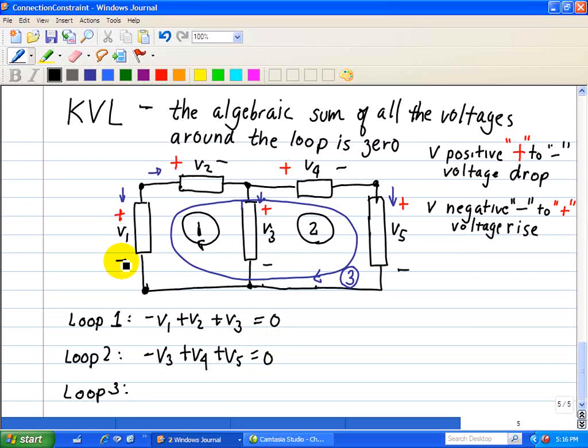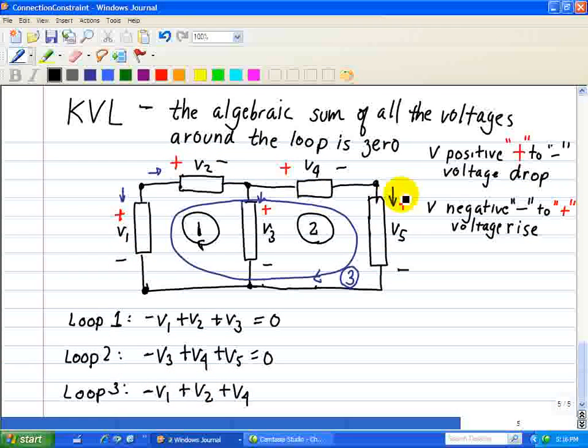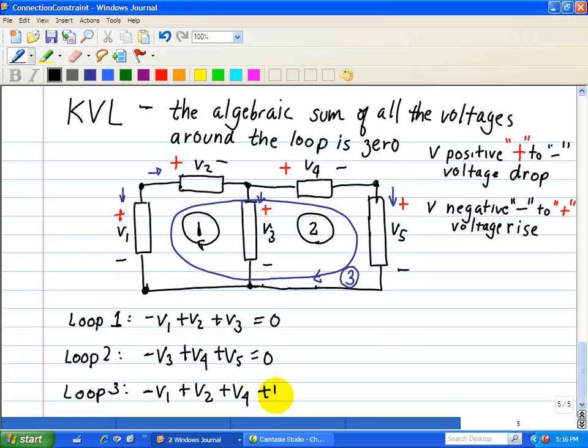Finally, for loop 3, we're going through device 1, 2, 4, and 5. So, here, this would be a negative V1, we're entering a positive V2, and a positive V4, and a positive V5, and that's all equal to 0.